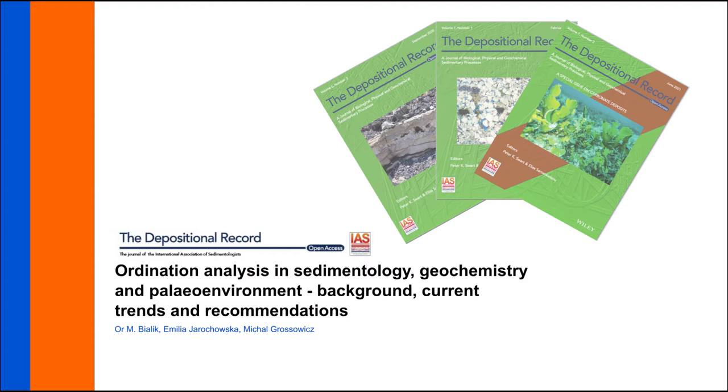The ones most common in geoscience are Principal Component Analysis or PCA, Non-Metric Multidimensional Scaling or NMDS, and Detrended Correspondence Analysis or DCA. We put a new paper out talking about all of them and how geoscientists have been using them and misusing them over the last three decades.